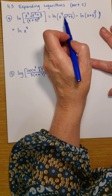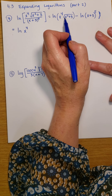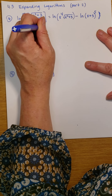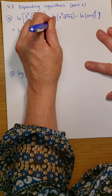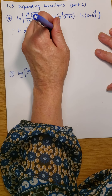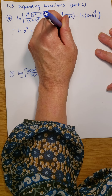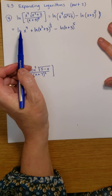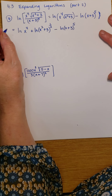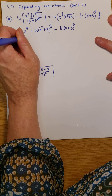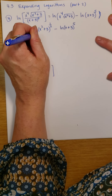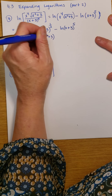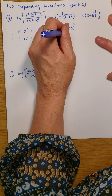Notice I have a square root here — that is going to be the power of 1 half. So I'm going to write that as plus the natural log of x squared plus 3 raised to the 1 half power. And then I have my minus ln of x plus 3 to the 5th power. In each case, I have an exponent that can come out front. So I'm going to write this as 4 times the natural log of x, plus 1 half times the natural log of x squared plus 3, minus 5 times the natural log of x plus 3.